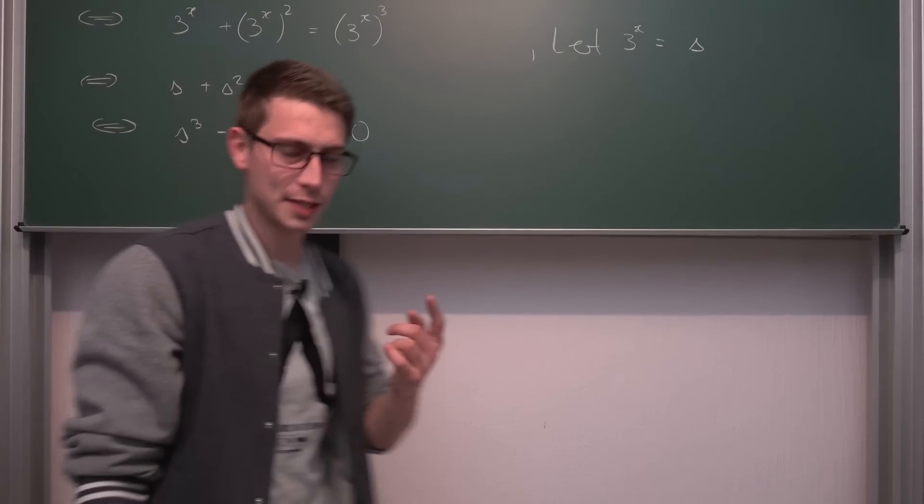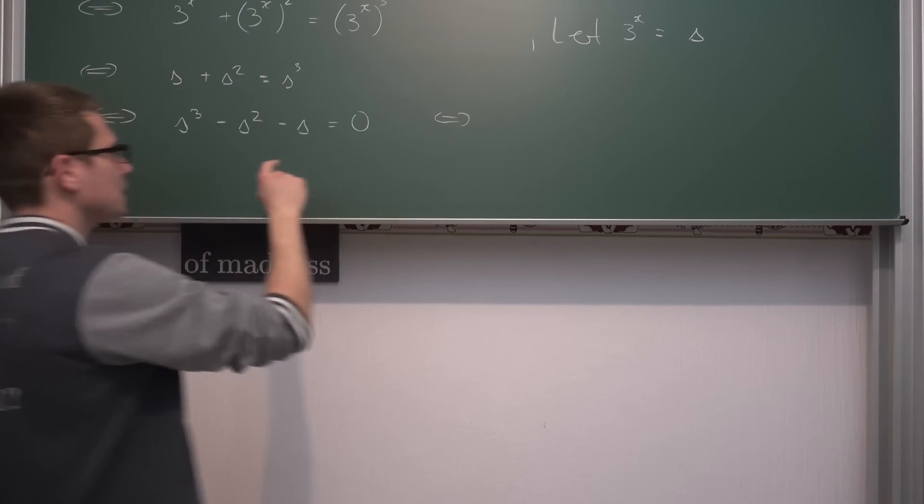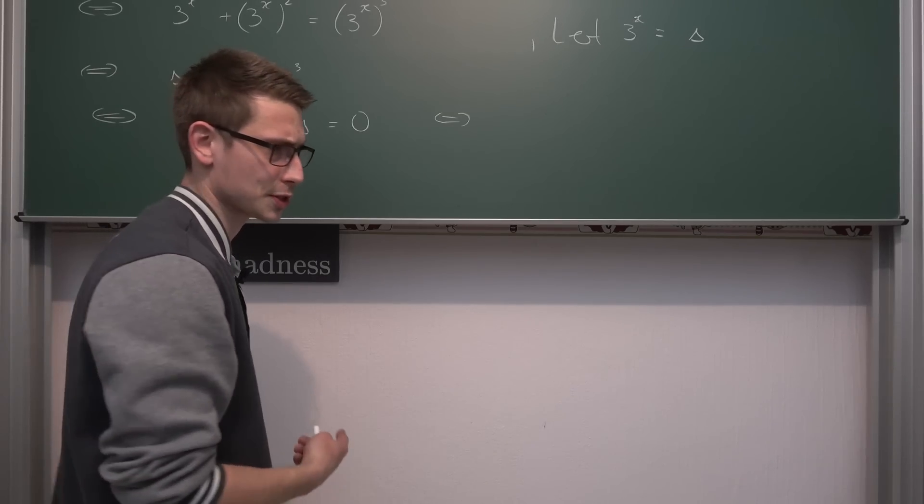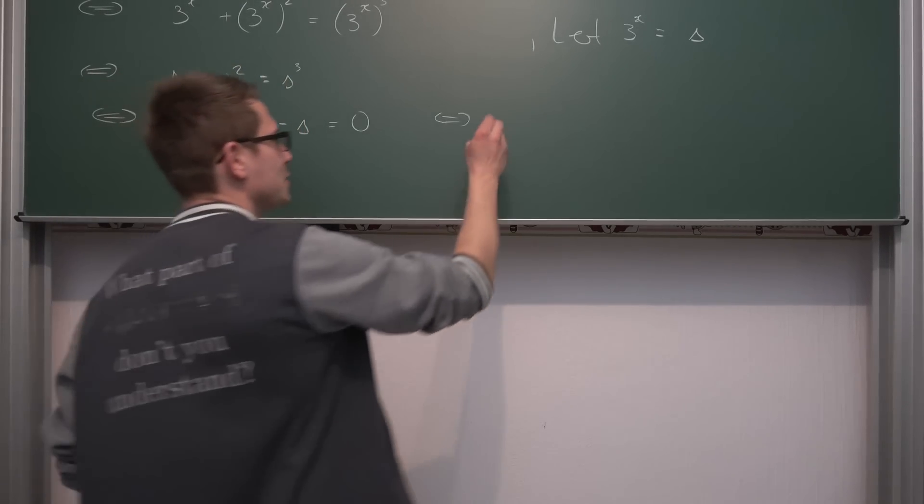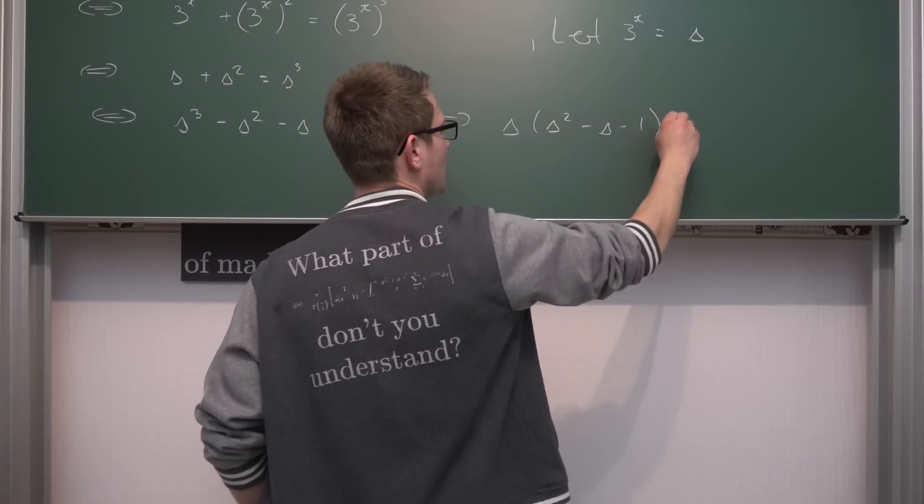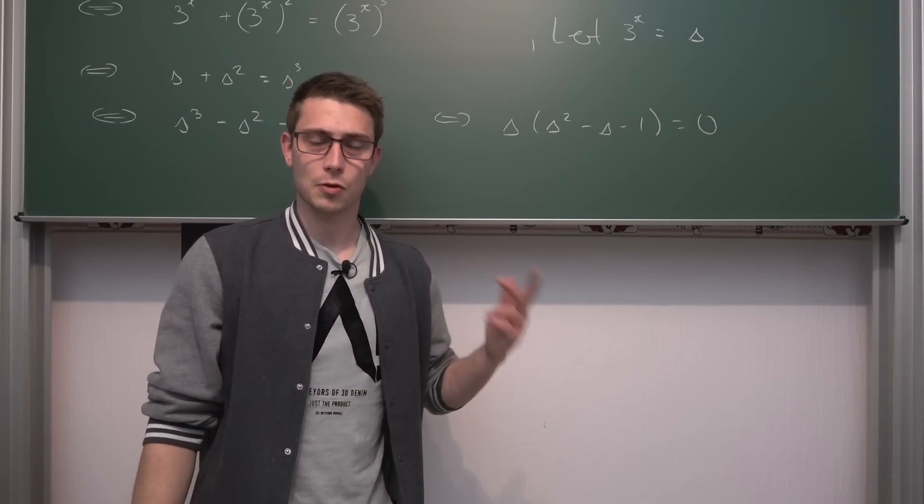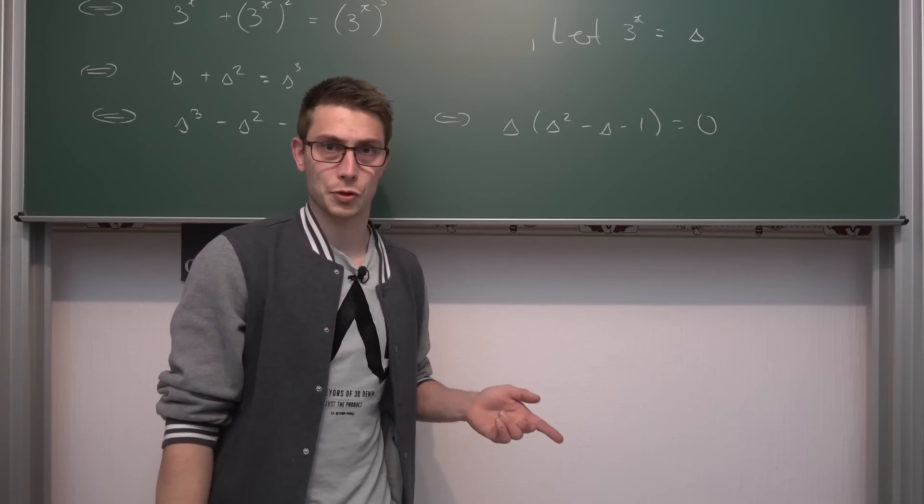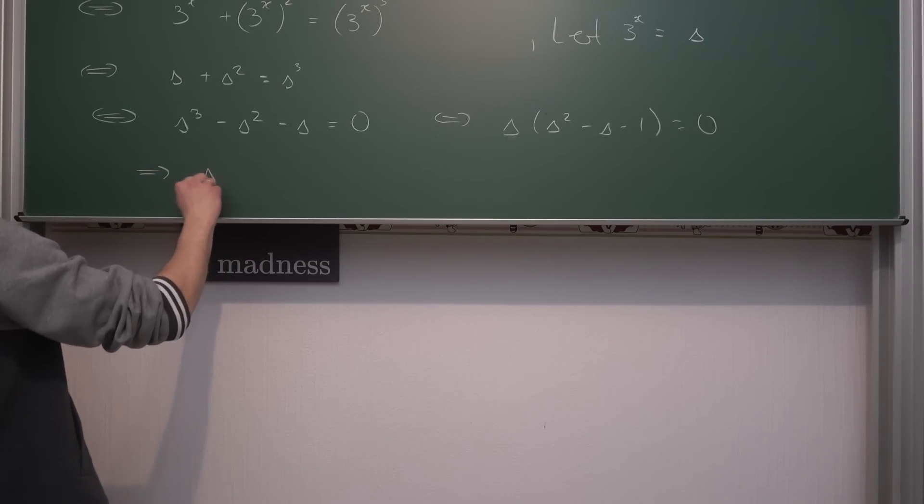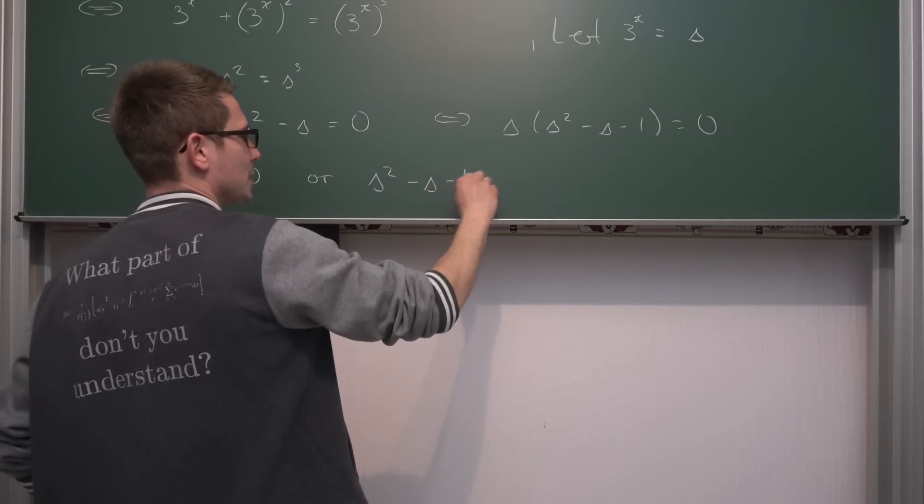That's equivalent to saying we have delta cubed minus delta squared minus delta is equal to zero. Now, the cool thing about that is that we can factor out a delta here. It's a common factor on all of these. And then, meaning we have factorized the left-hand side and something times another something is equal to zero. Which makes for some very great casework. So, meaning, delta times delta squared minus delta minus one is equal to zero. If you multiply two numbers together, that's equal to zero. This only holds if one of the parts is equal to zero or the other one is equal to zero. Meaning we have two cases.